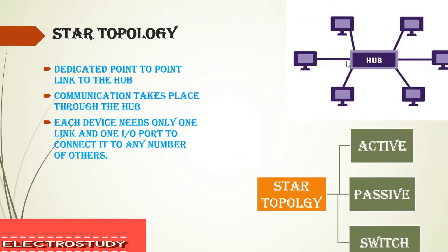The link formed can be wired or wireless. Based on the design of the hub, star topology is divided into three types: active hub star topology, passive hub star topology, and when the hub acts as a switch. These are the three types we are going to see in detail.